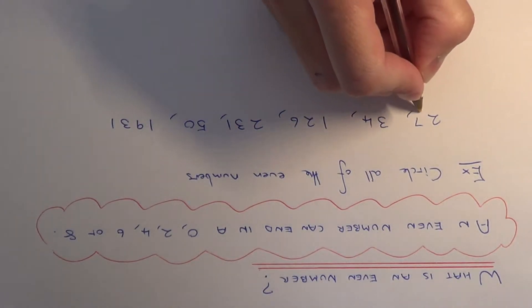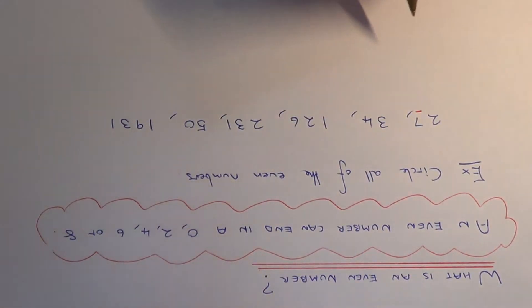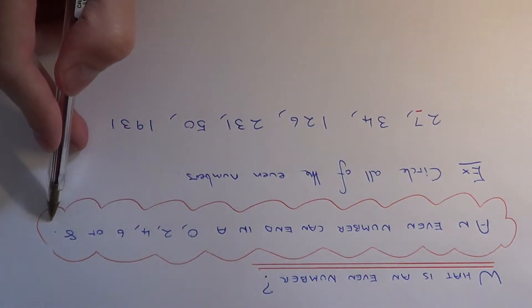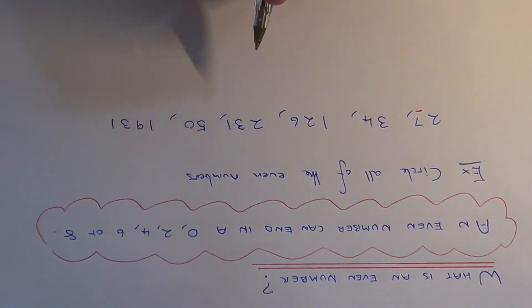So our first number is 27. If we look at the last digit, which is a 7, it's not 0, 2, 4, 6 or 8. So 27 is not an even number.